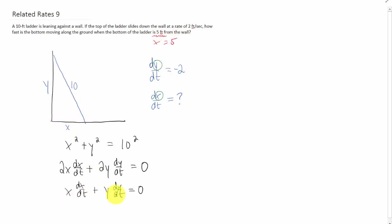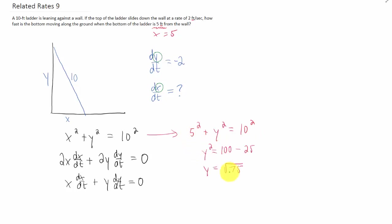We're going to plug in x equals 5 here, but we also need to know y. Fortunately, we have this Pythagorean theorem equation. At the moment x equals 5, we can solve for y. I got that y was the square root of 75.